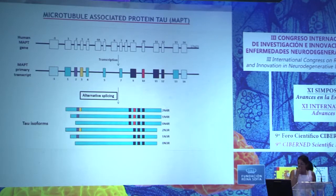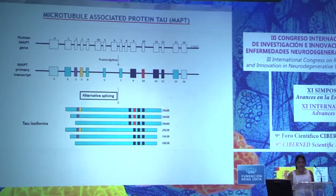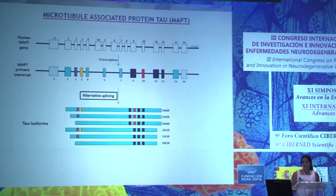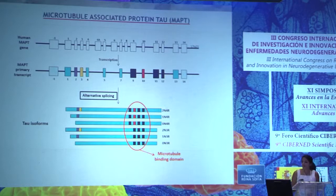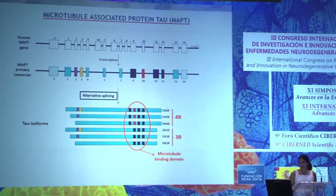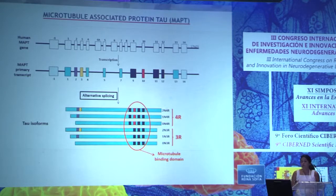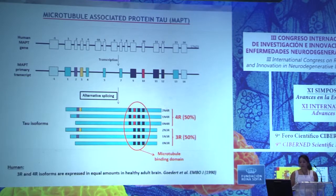In the human brain there are six isoforms of tau protein generated by alternative splicing. In the C-terminal region of the gene there are four exons encoding the microtubule binding domains. Inclusion of exon 10 produces three isoforms with four microtubule binding domains or repeats, and exclusion of exon 10 produces three isoforms with three microtubule binding domains or repeats. In a healthy human brain there are equal amounts of 4R and 3R tau.